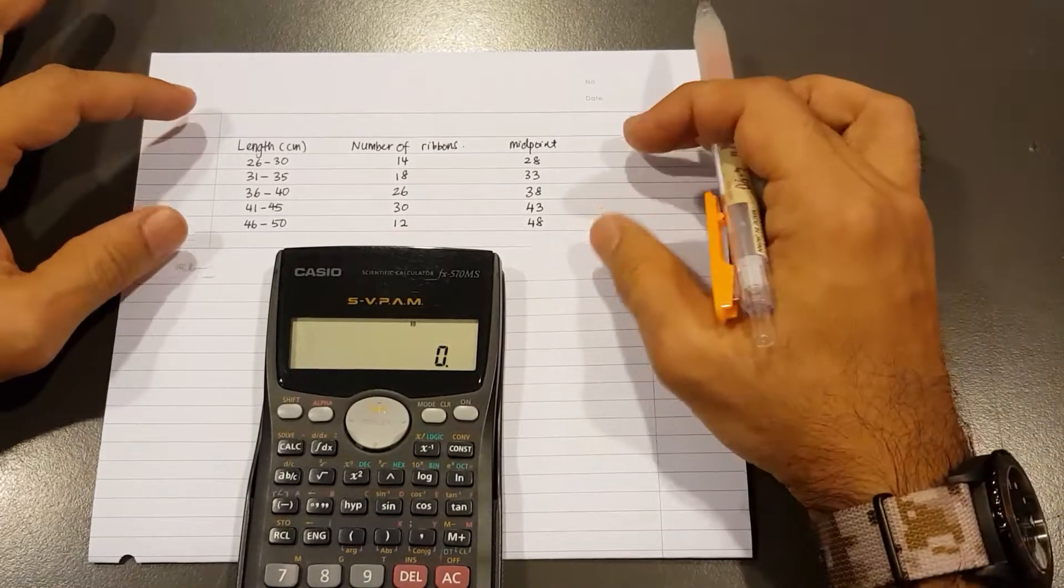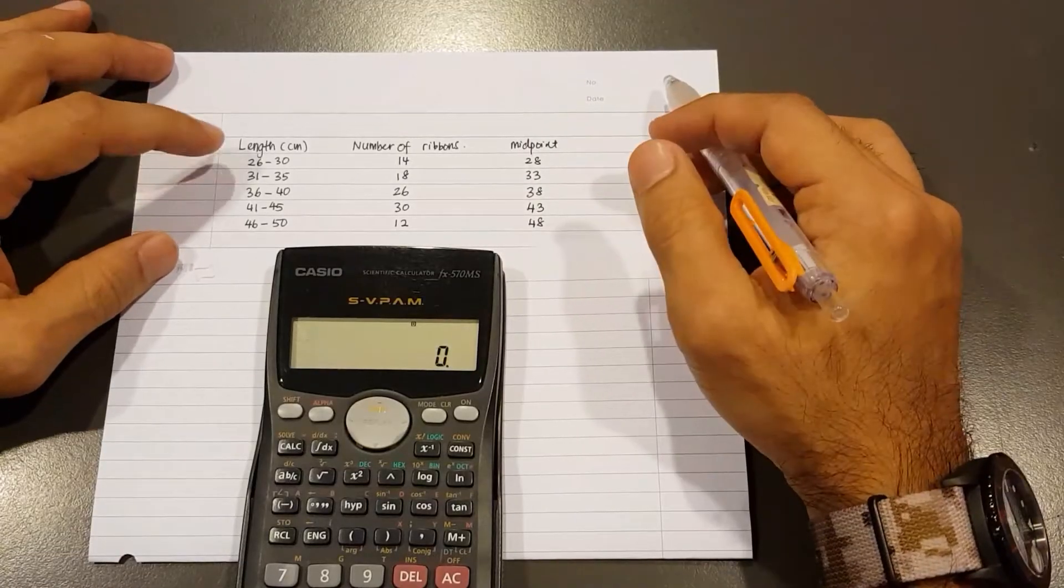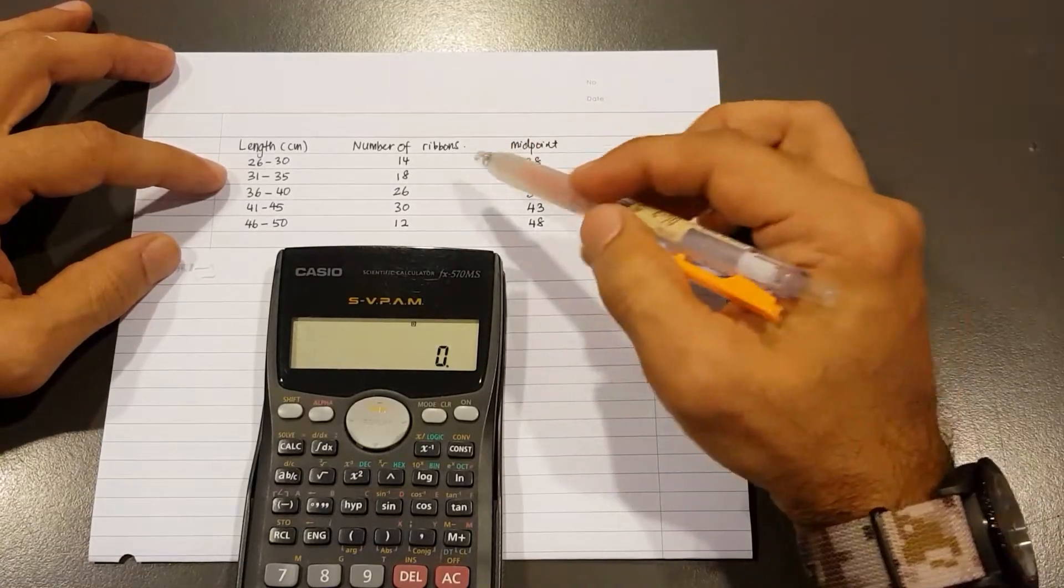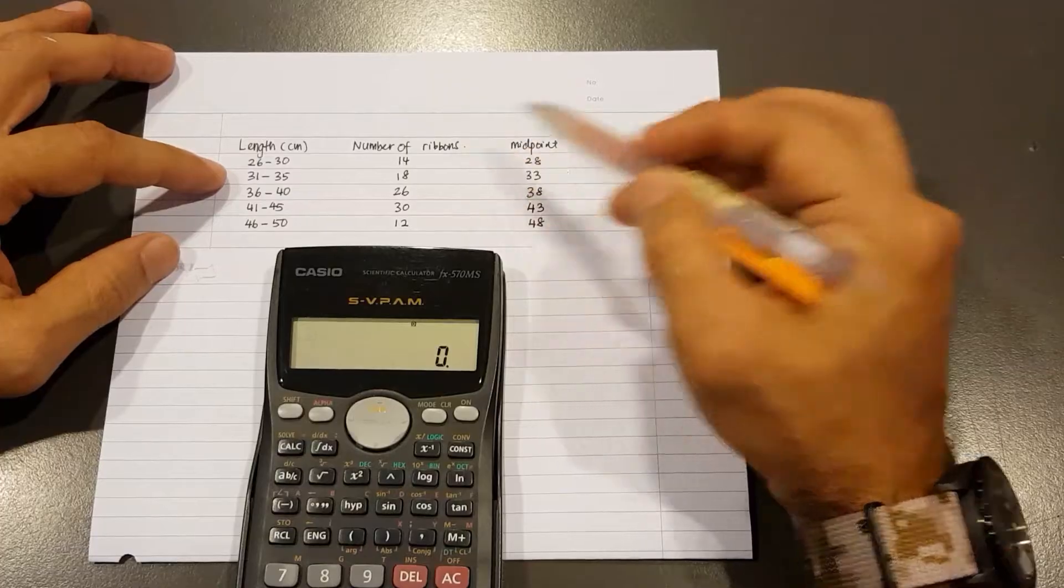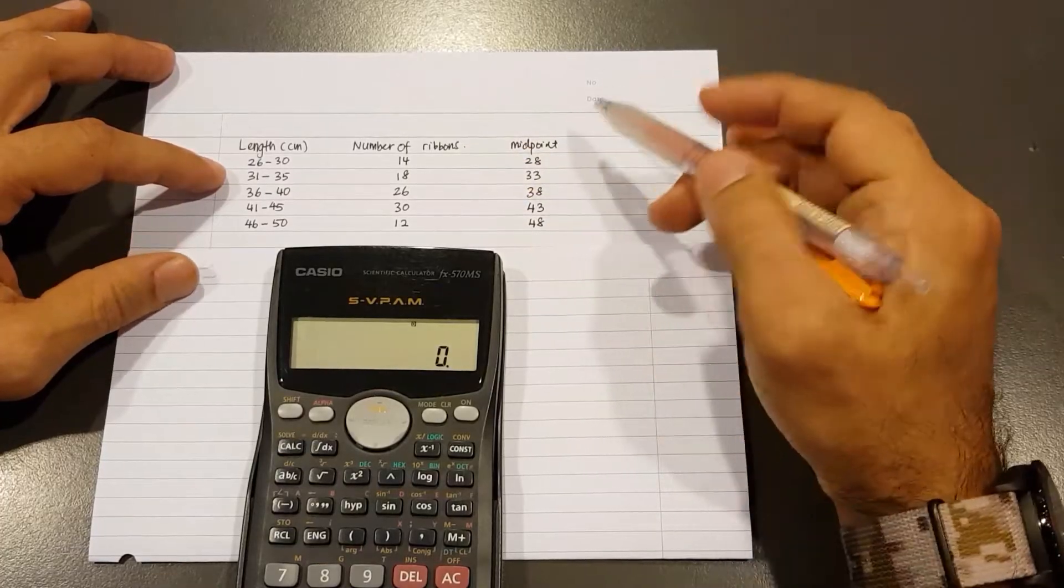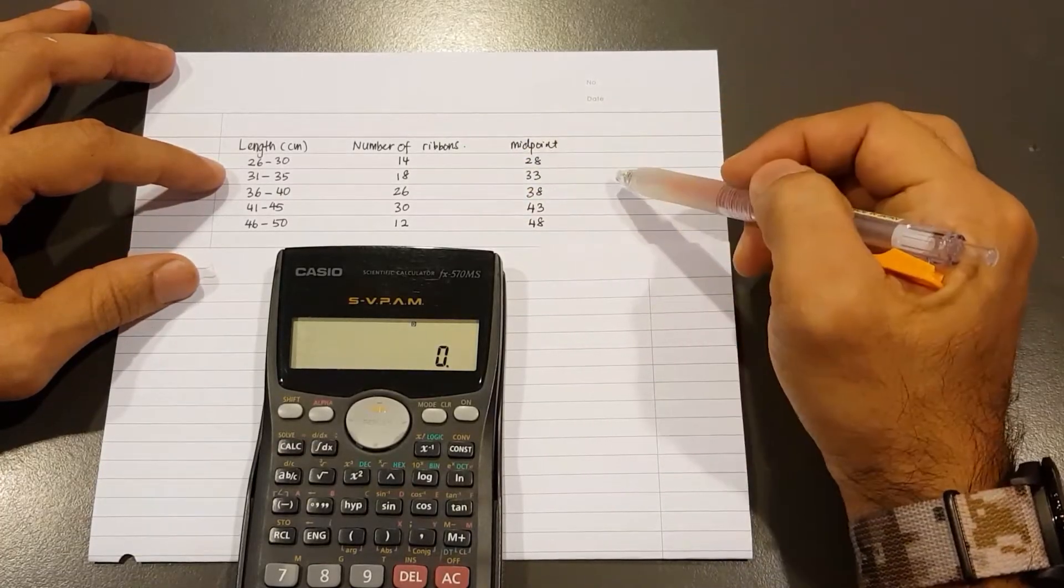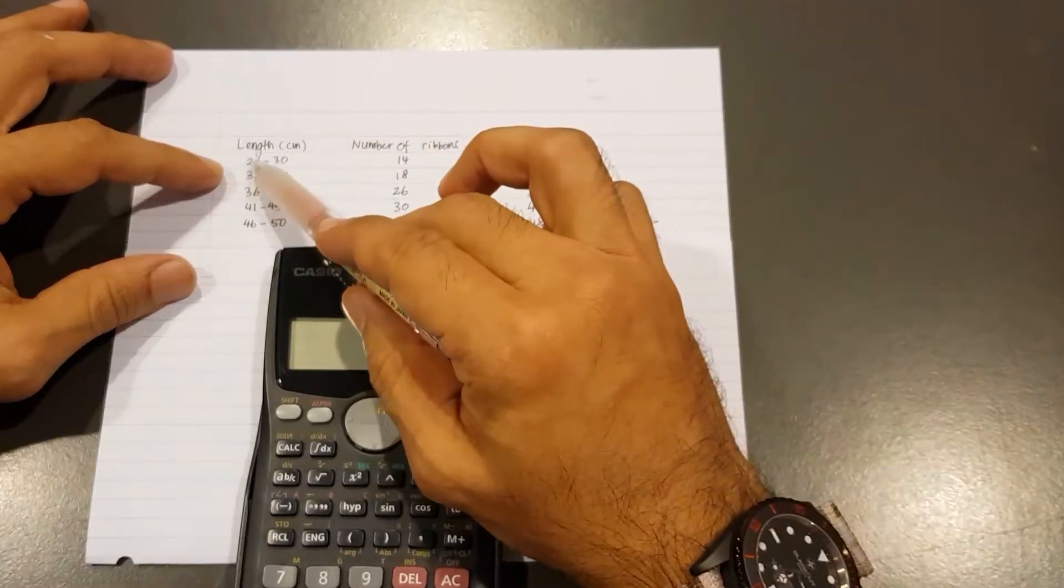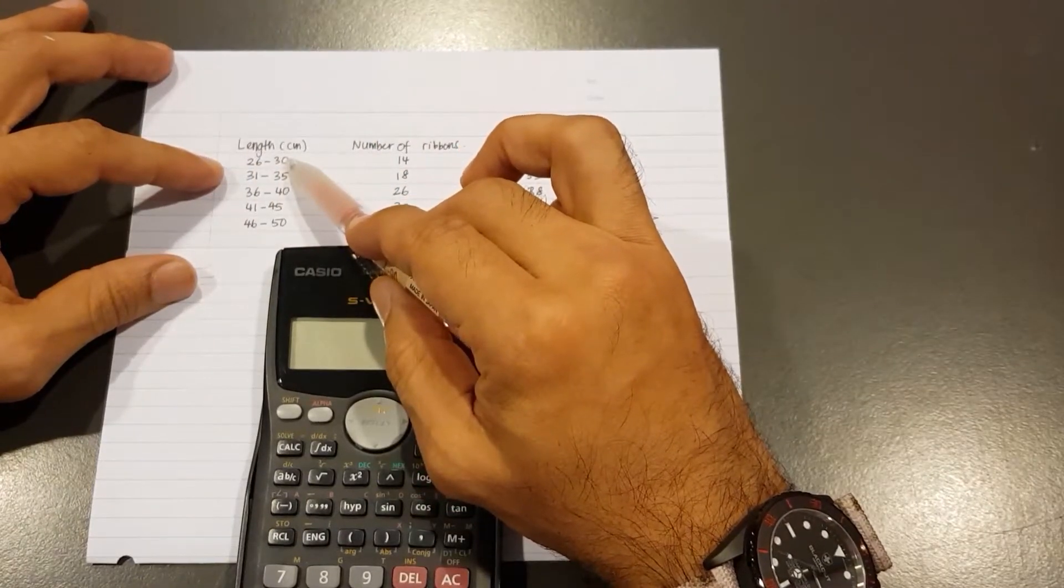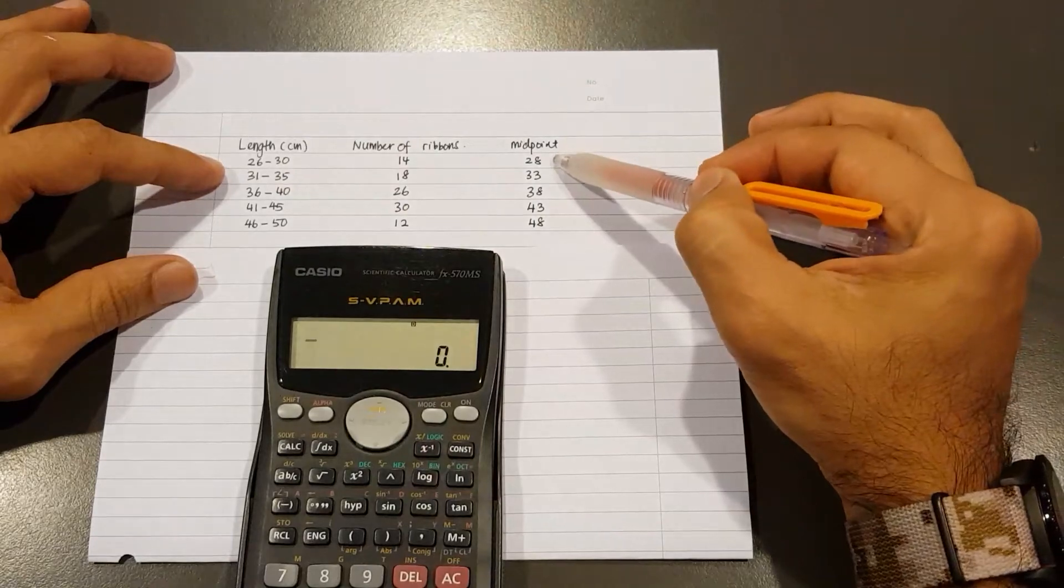What I have here is a simple table showing the length in centimeters and the number of ribbons. First we will need to find the midpoint. I can find the midpoint by taking 26 plus 30, divide by 2, so that gives me the first midpoint.